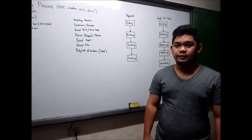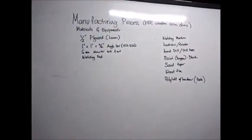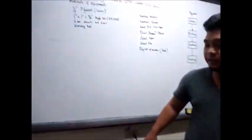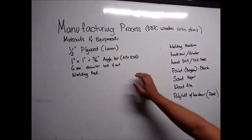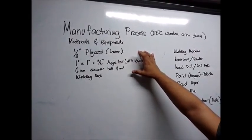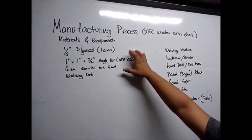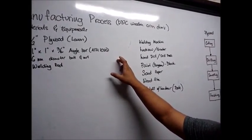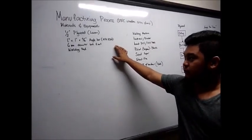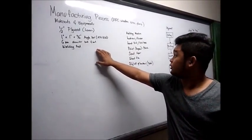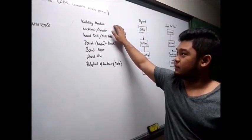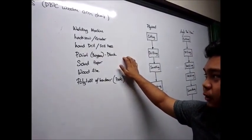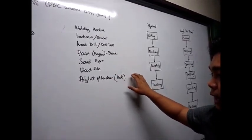This is the manufacturing process of the DPTC wooden armchair. The materials and equipment used in creating this wooden armchair are: one-half-inch plywood made from Lauan trees; one-by-one angle bar with a thickness of 3/16 inches; six-millimeter diameter bolt and nut; and a welding rod. The equipment includes welding machine, hacksaw or grinder, hand drill or drill press, black paint, sandpaper, wood file, and polytuck with hardener.